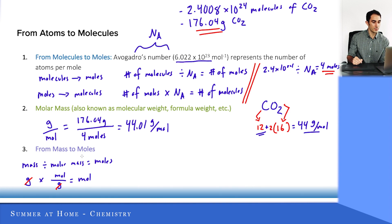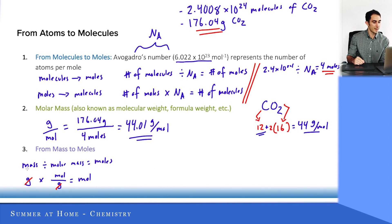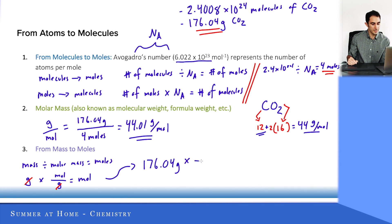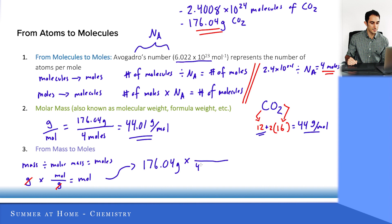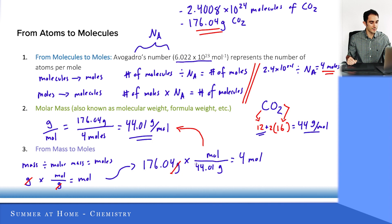Lastly, we can convert from mass to moles — I just want to do this to prove we did all the calculations correctly. I have 176.04 grams and the molar mass, so let's verify that we get 4 moles. Taking the mass divided by the molar mass: 176.04 grams multiplied by the inverse of the molecular weight — which is 1 mole per 44.01 grams — gives 4 moles. Notice how the gram units cancel out.